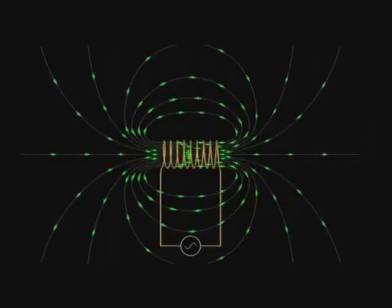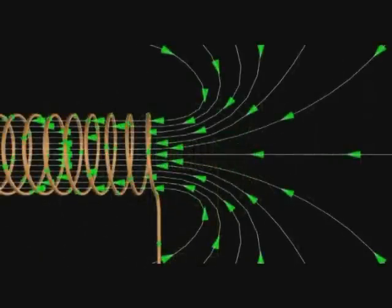We've already discussed coil action, so we know that when we send a current through a coil of wire, it produces a magnetic field.